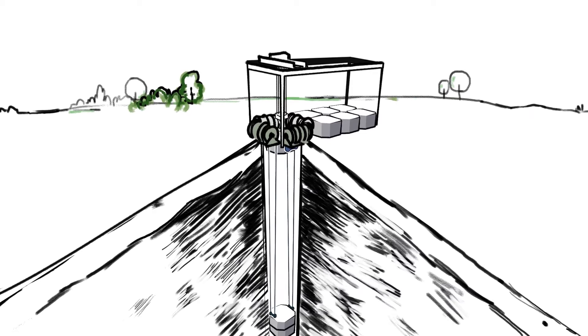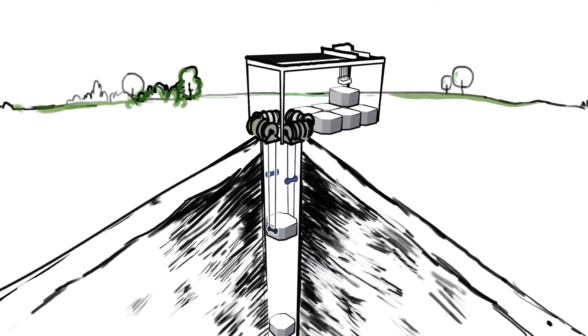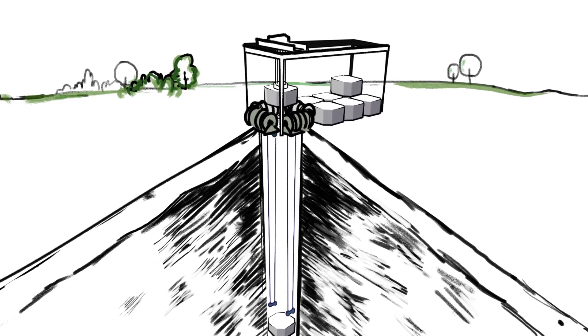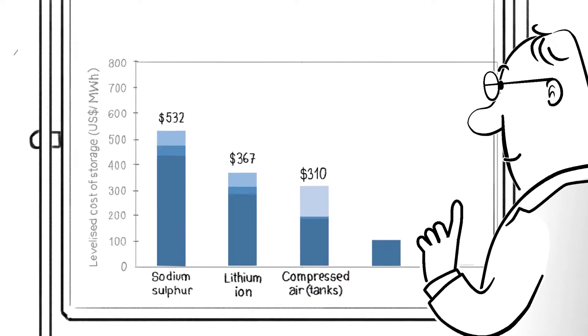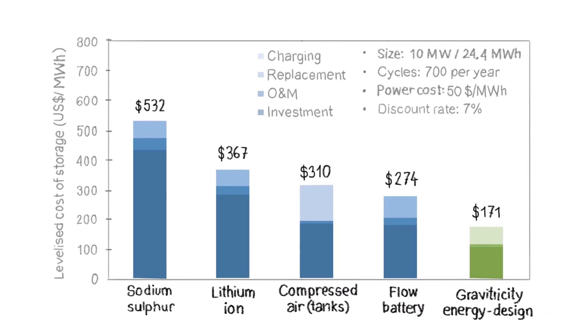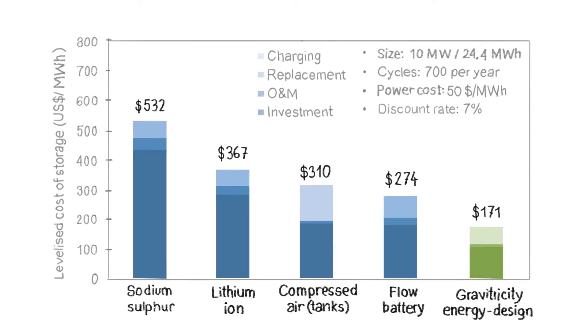We have four existing patents including a recent application for a multiple weight system which can store much larger quantities of energy at even lower cost and deliver it for longer durations. Analysts at Imperial College calculate that our multi-weight technology will be cheaper than the current leading force of energy storage including lithium-ion batteries.